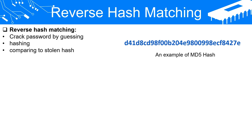This is where reverse hash matching comes in. Attackers who gain unauthorized access to a system's stored password hashes can attempt to reverse the hash function. They do this not by actually reversing the function, which is computationally infeasible, but by guessing what the original password might have been, hashing that guess, and then comparing it to the stolen hash. If the two hashes match, they've successfully cracked the password.